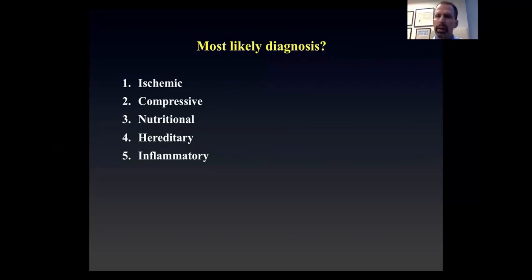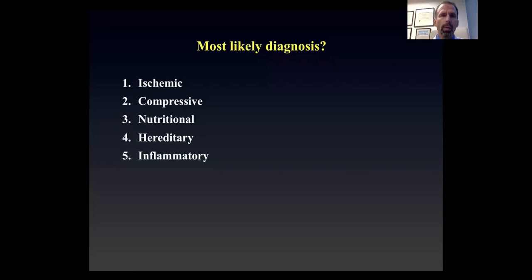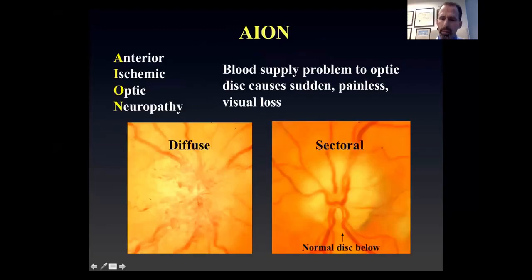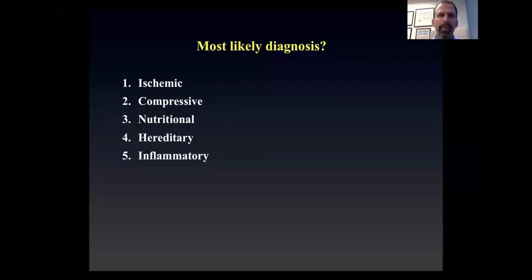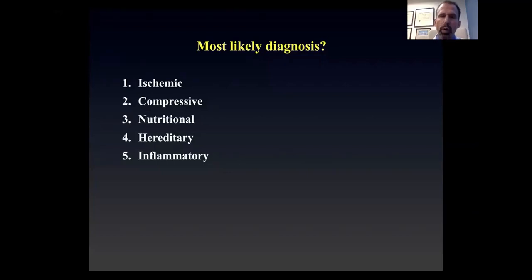So we tried a quick poll. The most likely diagnosis for most of you is the correct diagnosis: ischemic. A few people thought maybe compressive, nutritional, or inflammatory, but the vast majority said ischemic. That is true, certainly in an older person. Someone over 50 with sudden onset of change in vision in one eye who has optic disc swelling is usually going to have an anterior ischemic optic neuropathy.